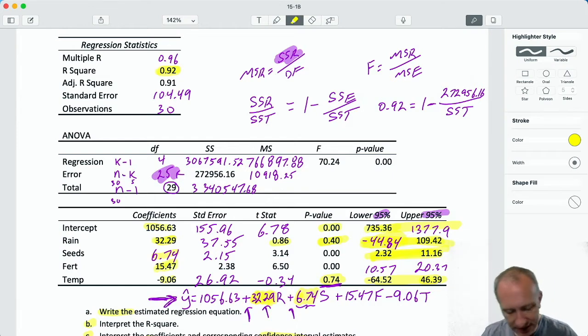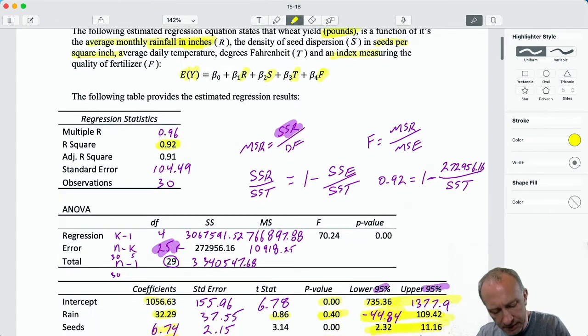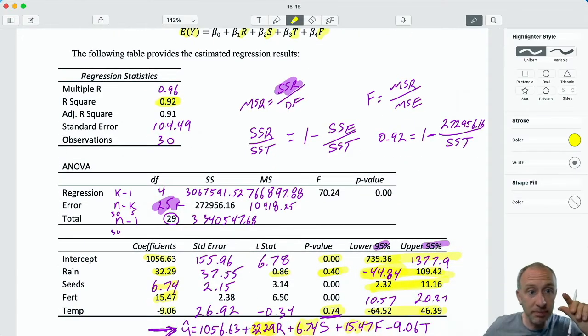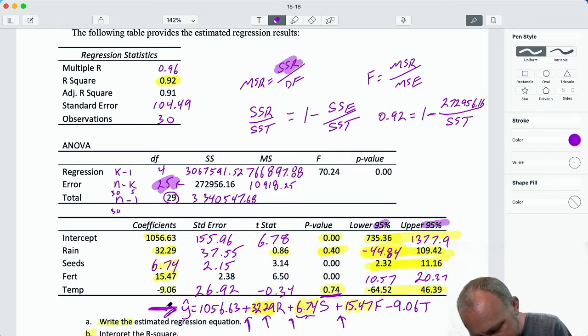I'm rounding those decimals a little bit. I'm 95% confident that each additional seed per square inch increases average wheat yield by between 2.3 and 11.2 pounds. Fertilizer point estimate. What is our measurement, our units? This is an index. So for each additional point on this fertilizer quality index, each additional point of quality increases, again, because it's positive, increases average wheat yield by 15.47 pounds. Okay, you kind of get the hang of it. You see the pattern of how we interpret these.